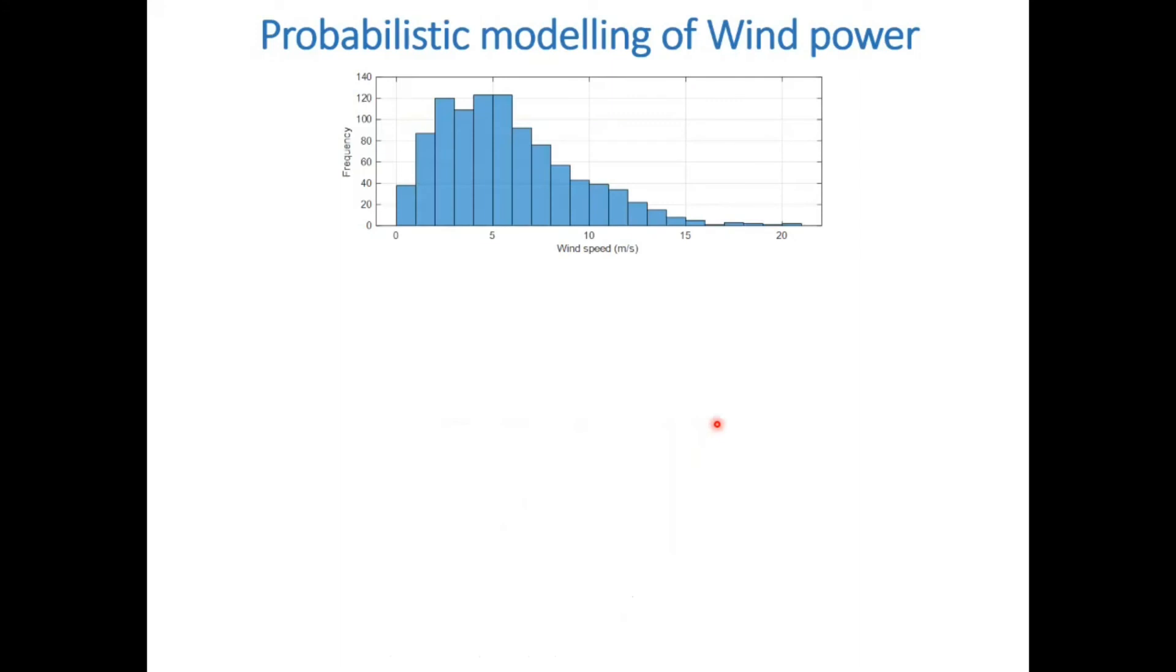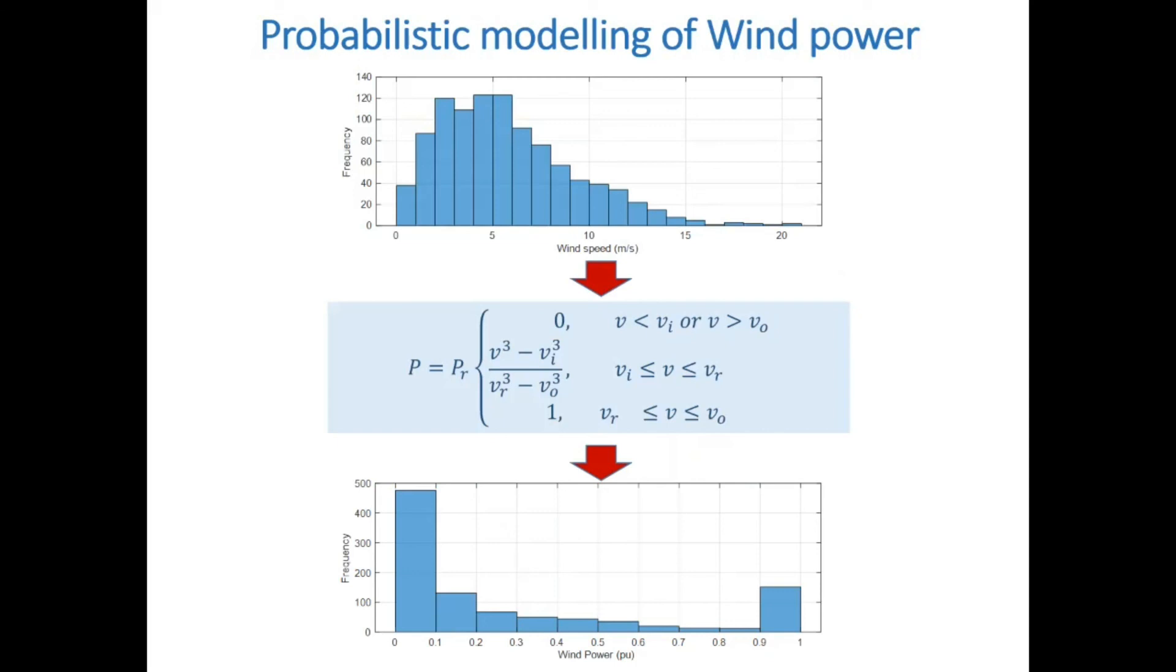In summary, the probabilistic modeling of wind power includes the modeling of wind speed data set using a Weibull distribution, which is then converted into wind power using the speed to power conversion function shown here.